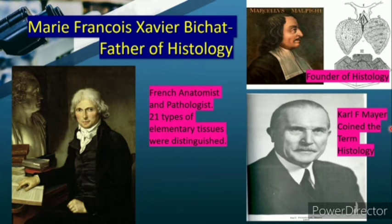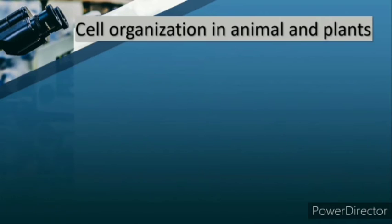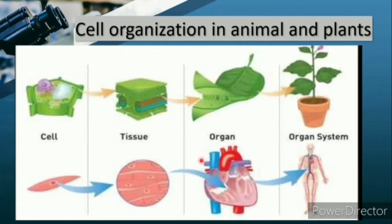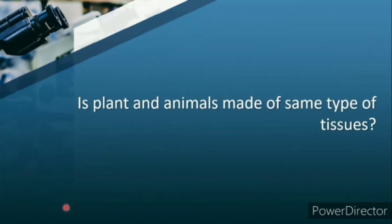These were the people behind histology. Now coming to cell organization - observe this image. Cells combine to form a tissue, layers of tissues combine to give a particular organ, and all organs come together to form an organ system. This is seen in both plants as well as in animals.